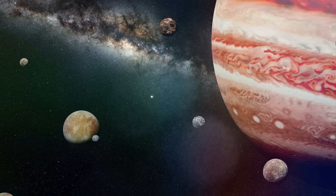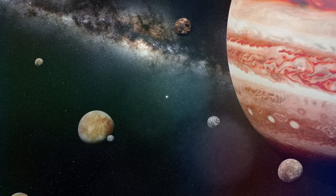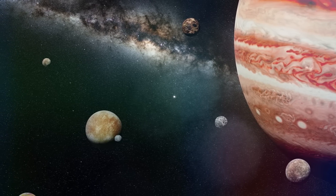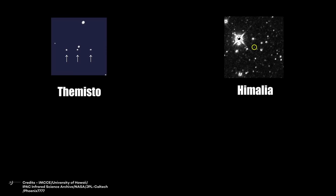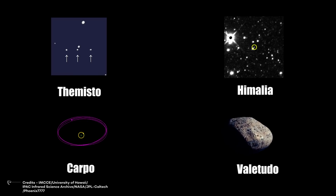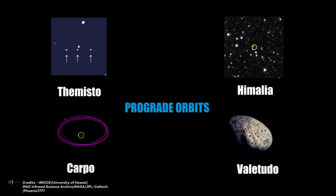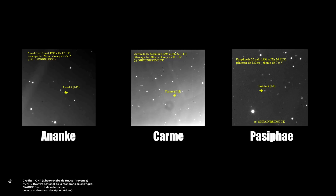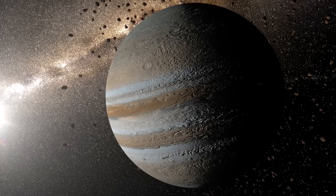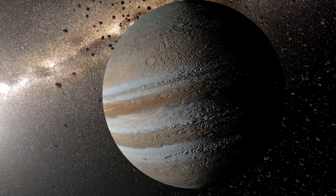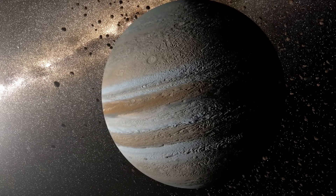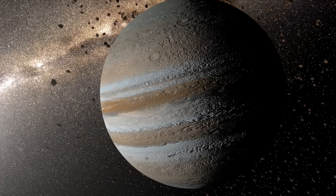The remaining 72 moons are irregular and located much further from Jupiter. Of these, Himalia, Themisto, Carpo, and Valetudo have prograde orbits, whereas Ananke, Carme, and Pasiphae's orbits are retrograde. Why Jupiter has such a wide variety of moons can be explained by the different origins of regular and irregular satellites.